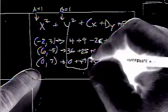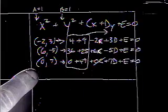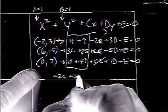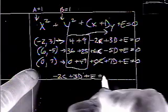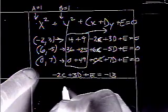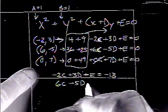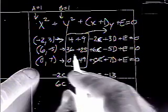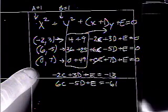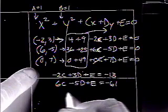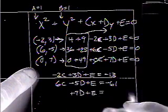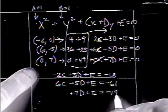Now, these things are constants and need to be taken to the other sides of the equations. So, this is negative 2c, plus 3d, plus e, equals negative 13. And, 6c, minus 5d, plus e, equals negative 61. And, 7d, plus e, equals negative 49.